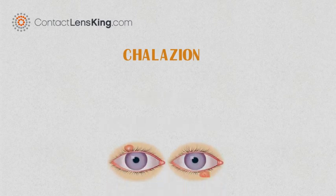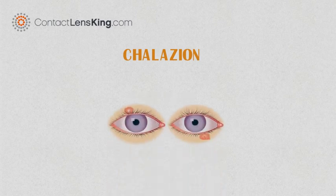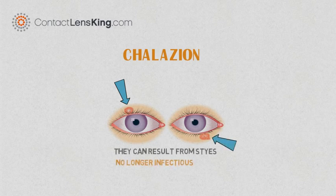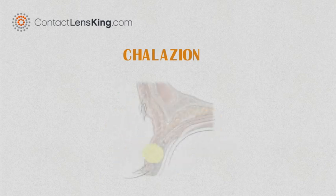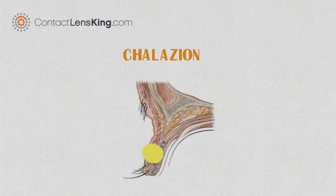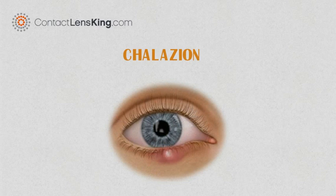A Chalazion is a benign, painless bump or nodule inside the upper or lower eyelid. They can result from styes that are no longer infectious and have since healed. They form around oil glands within the eyelid, which can result in red, swollen eyelids.